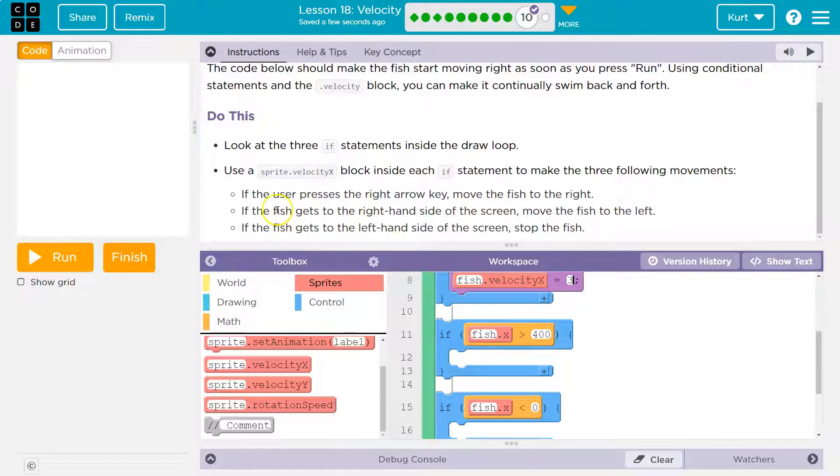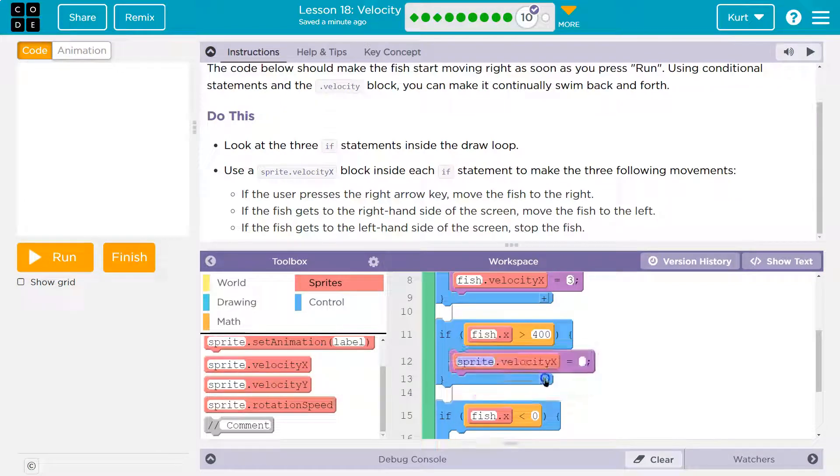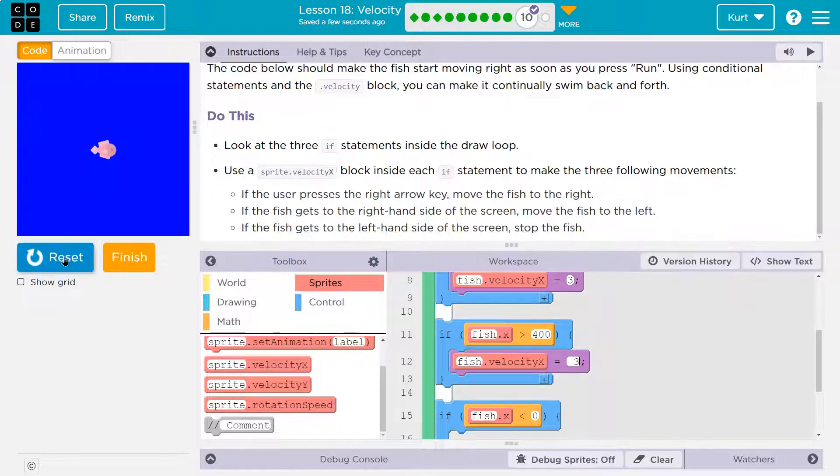Now we want to make it so if the fish gets to the right side of the screen, move the fish to the left. So they need to bump into the wall. The right side of the screen is 400. So what would we want to do to make the fish move to the left? Well, if it has a velocity of three and that goes this way, what would make it go to the left? I hope you said the reverse velocity. Yes.